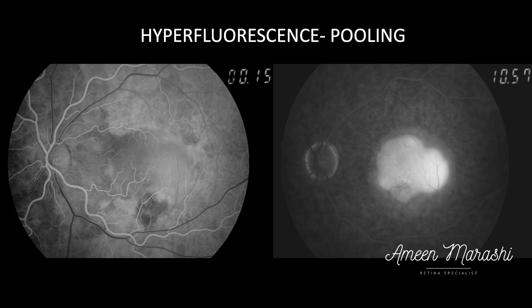Hyperfluorescence has several types. How do we differentiate pooling from leakage? The principle of pooling is the accumulation of dye in a defined space, as in this example of a serous pigment epithelial detachment with subretinal fluid.